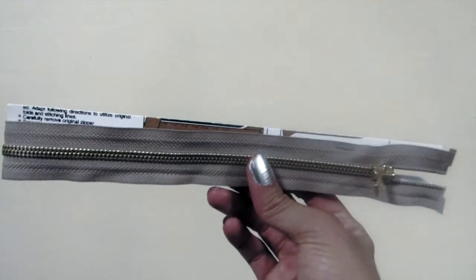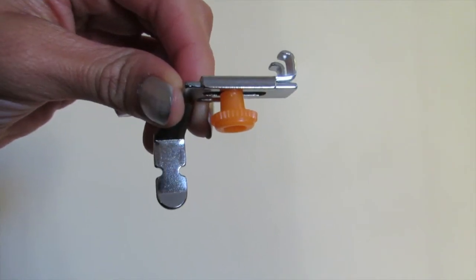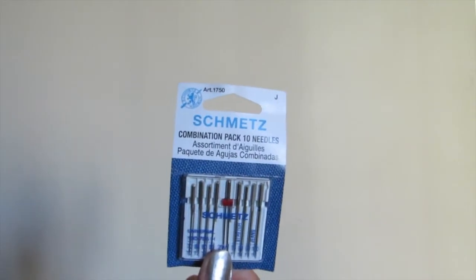9 by 12 tracing paper, writing utensil, zipper, sewing pins, a zipper foot, and sewing needles that will not puncture the fabric.